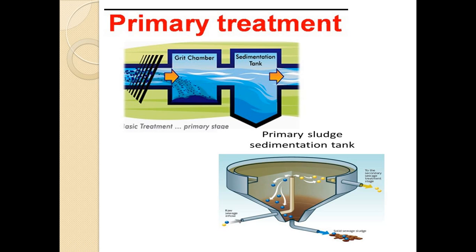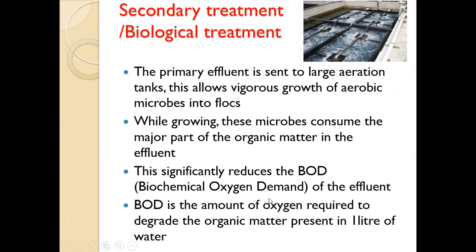The primary effluent formed after primary treatment is passed on for secondary treatment. Secondary treatment is otherwise called biological treatment. Here comes the role of microorganisms. The primary effluent is sent to a large aeration tank, and the supernatant from the primary treatment flows into this large aeration tank, which allows vigorous growth of aerobic microbes into flocs.